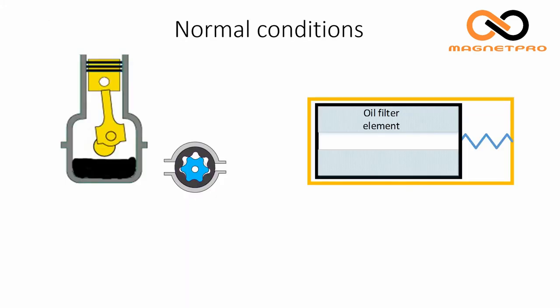In an engine system, we to the left have a representation of the engine. The blue wheel here is the representation of an oil pump, and the yellow square on the right side is an oil filter with an oil filter element inside it.